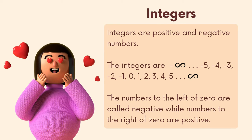Integers are positive and negative numbers. The integers go from negative infinity right on up to positive infinity. For example: negative five, negative four, negative three, negative two, negative one, zero, one, two, three, four, five. The numbers to the left of zero are called negative, while numbers to the right of zero are positive.